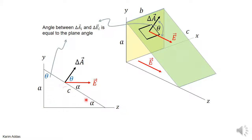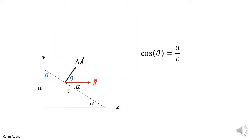Since theta plus alpha equals 90, and this angle plus alpha also equals 90, that means this angle in the triangle is also theta — exactly the same as the angle between E and the area vector.